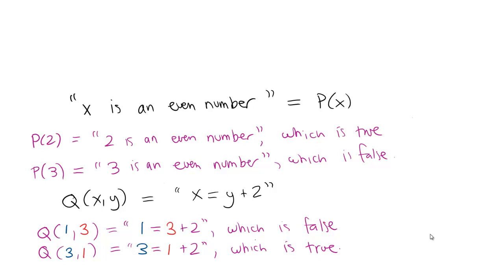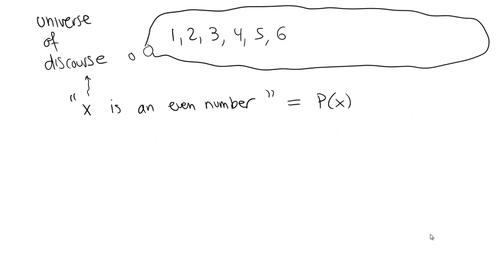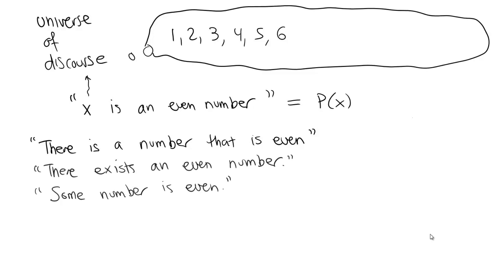When you have a propositional function, there's always in the back of your mind something called the universe of discourse, or domain of discourse — a collection of things that everyone agrees you could plug in for the variable. Suppose we've agreed the domain is {1, 2, 3, 4, 5, 6}. Now, how would you translate the sentence 'there is a number that is even,' or 'there exists an even number,' or 'some number is even'? These three sentences mean the same thing.